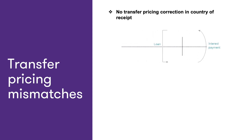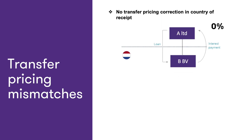On this slide you see two examples of mismatches resulting from transfer pricing corrections. In the first situation, a 0% interest loan is granted by A Limited to the Dutch BV. As a result of the arms-length principle, the Dutch BV will deduct interest against 5%. In this example, country A did not implement the arms-length principle, hence no correction on the profit will take place at the level of A Limited.